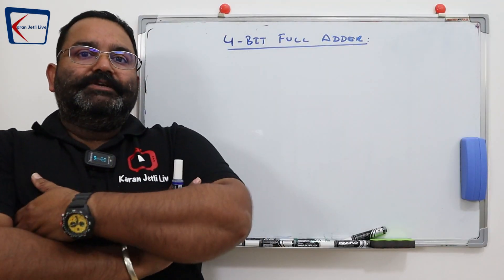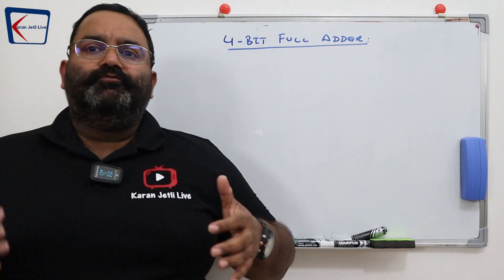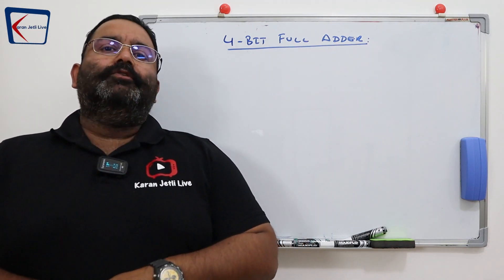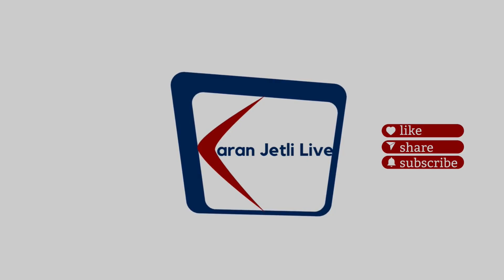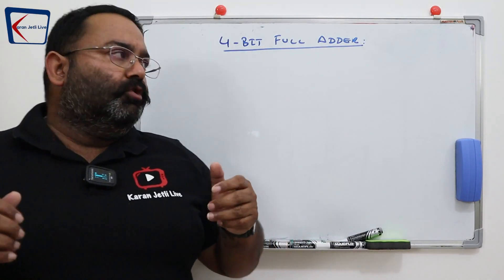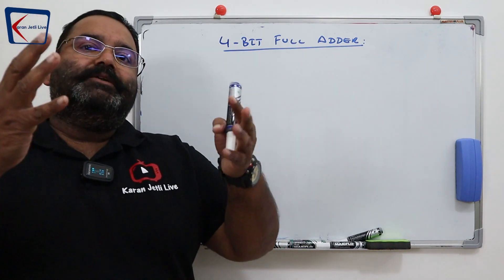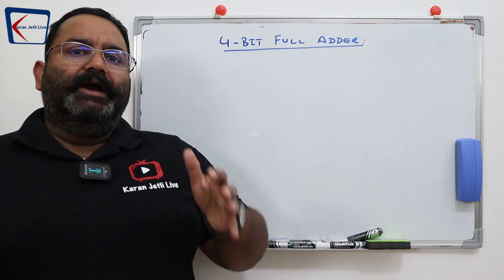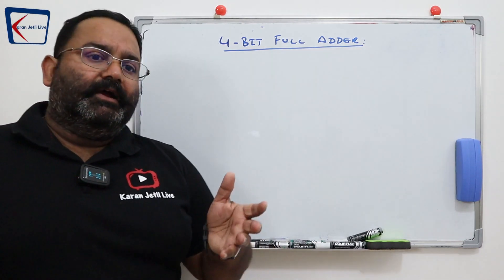Hi guys and welcome to my channel. Today in this video I'm going to explain the 4-bit full adder with the help of an example. A 4-bit full adder is a circuit which can add two 4-bit binary numbers. It does the complete addition, that's why we call it a full adder.